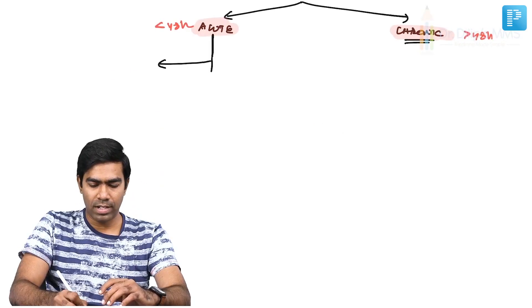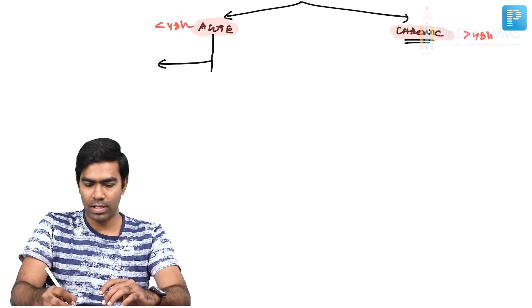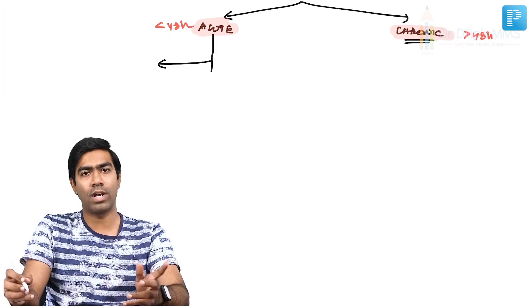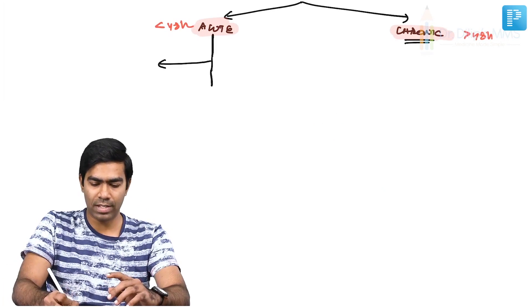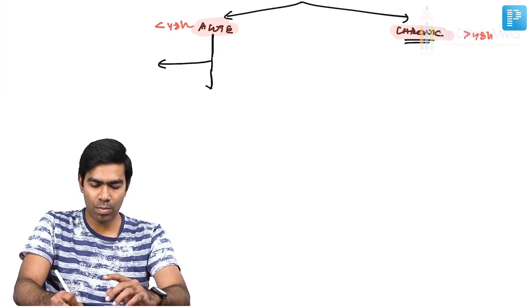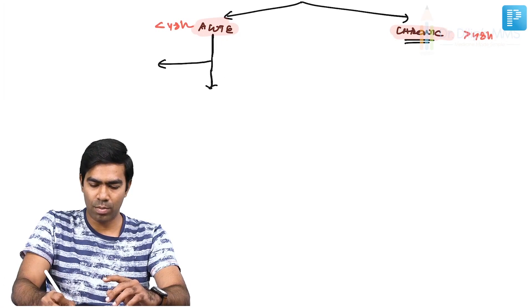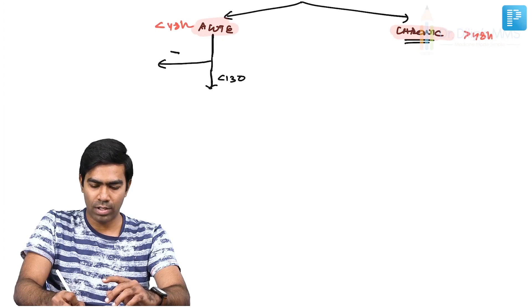You need to know whether the patient is symptomatic or asymptomatic. Even before that, you have to know whether the patient is having a serum sodium of less than 130 or a serum sodium of more than 130.